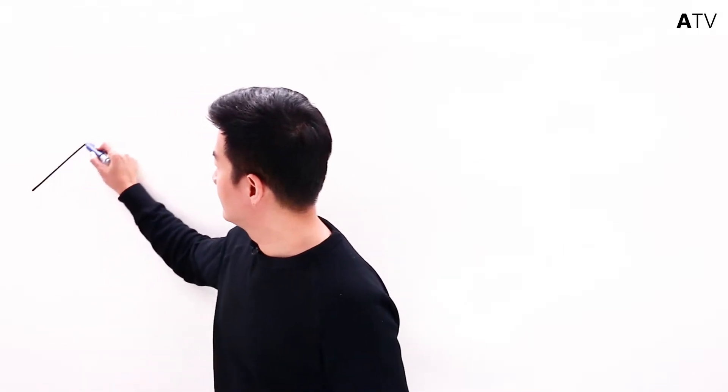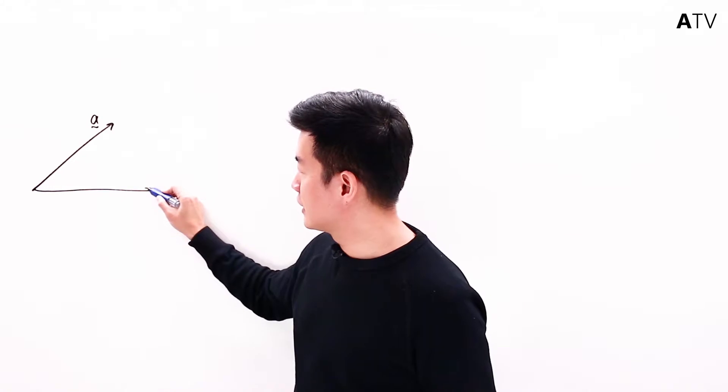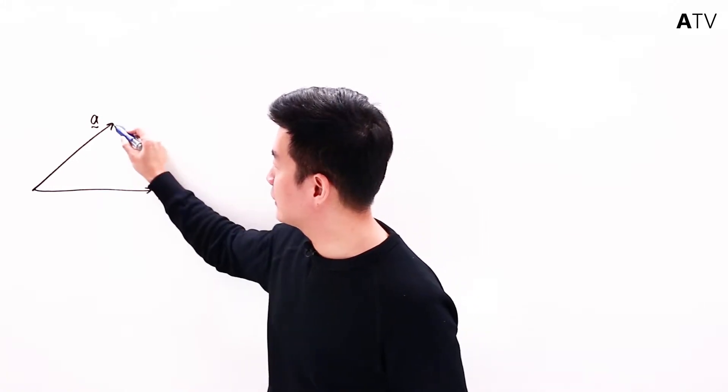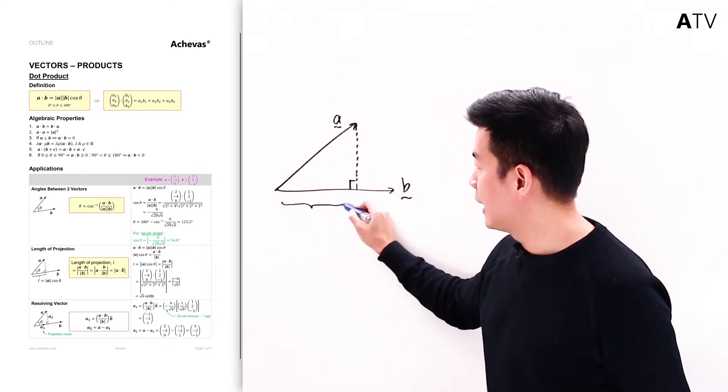And the first one is our visualization of distance. Let's take a look at this particular scenario. A, a vector that is given. B, another vector that is given. What if we want to calculate this distance here? And I'm telling you, you cannot use a formula.